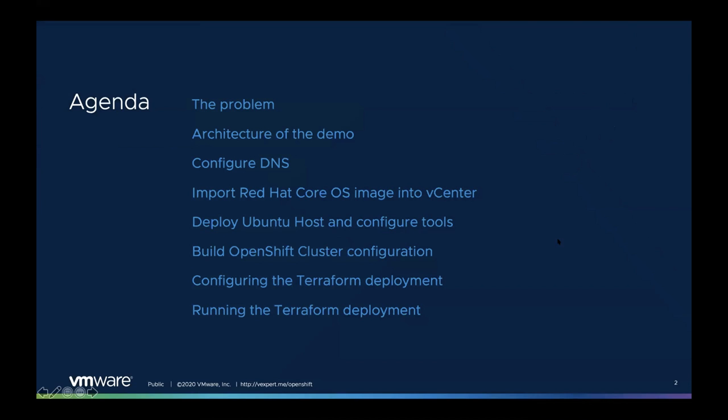So a quick look at the agenda. Essentially we're going to cover the problem we're trying to solve using automation to deploy OpenShift, look at the architecture of this demo we're going to set up, and then run through the actual steps itself.